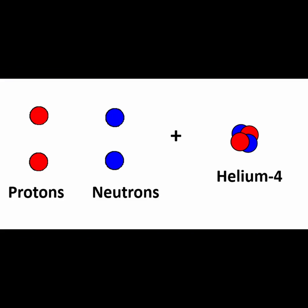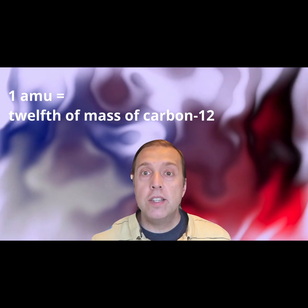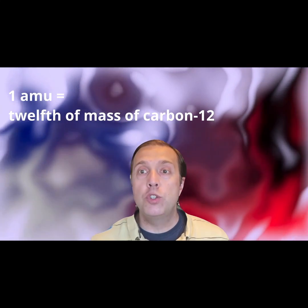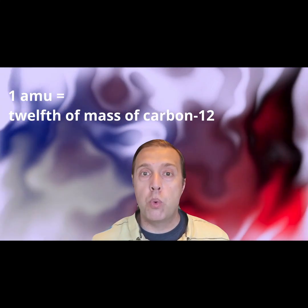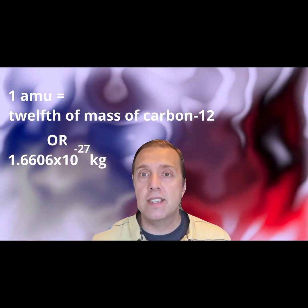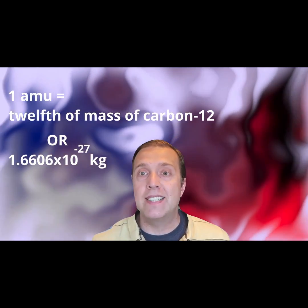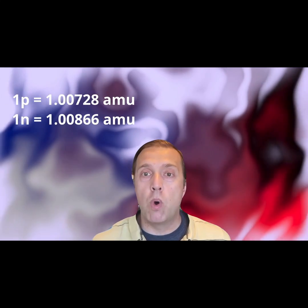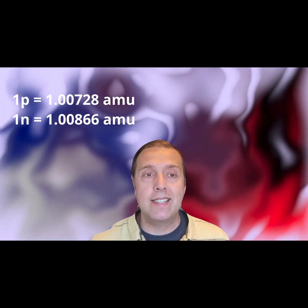We can analyze the nuclear binding energy to build up a helium atom from its constituent parts. One atomic mass unit, or one AMU, is defined as one twelfth of the mass of a carbon-12 atom, which equates to approximately 1.6606 times 10 to the power of minus 27 kilograms. A lone isolated proton has 1.00728 AMU, and a neutron has 1.00866 AMU.